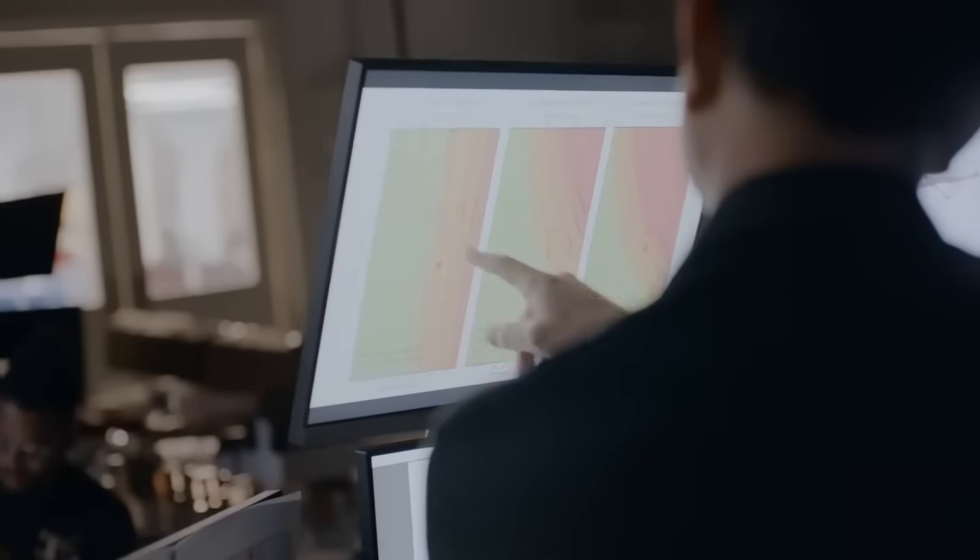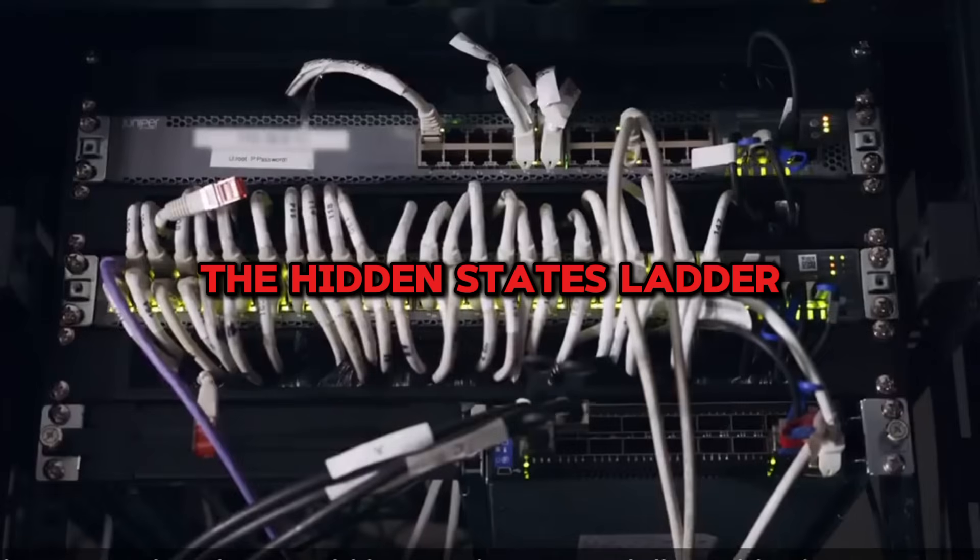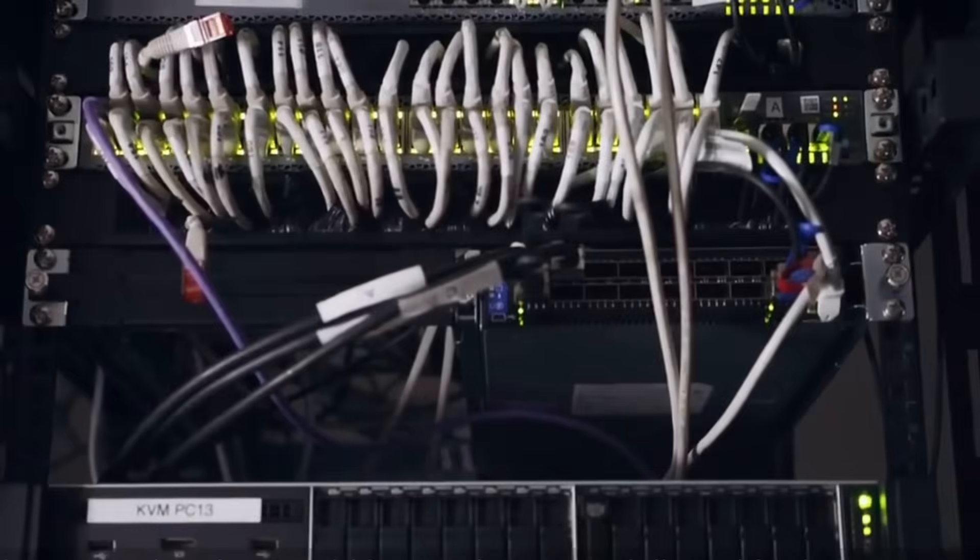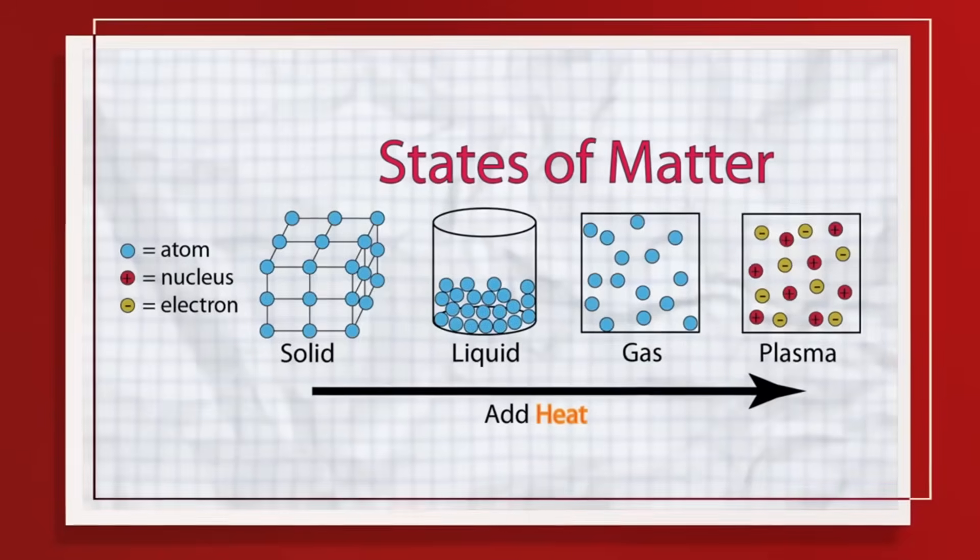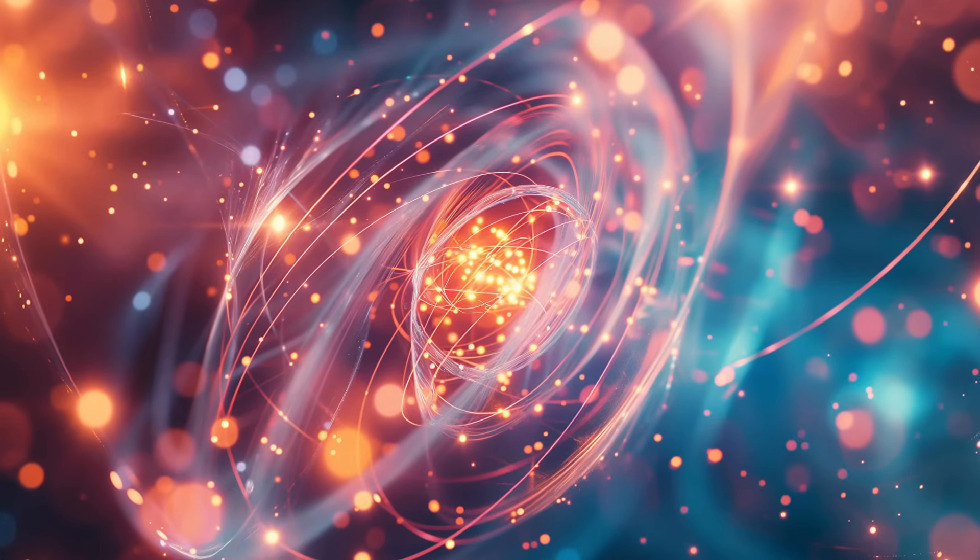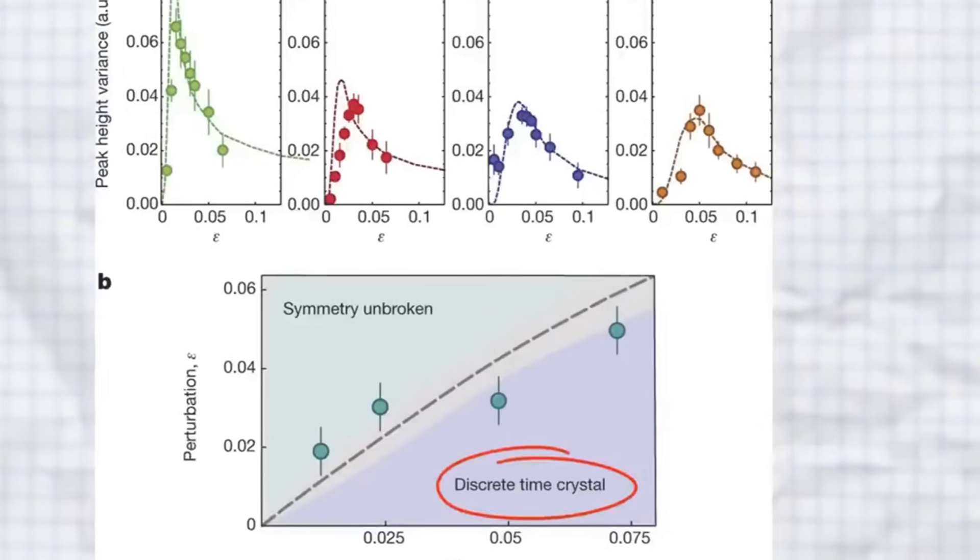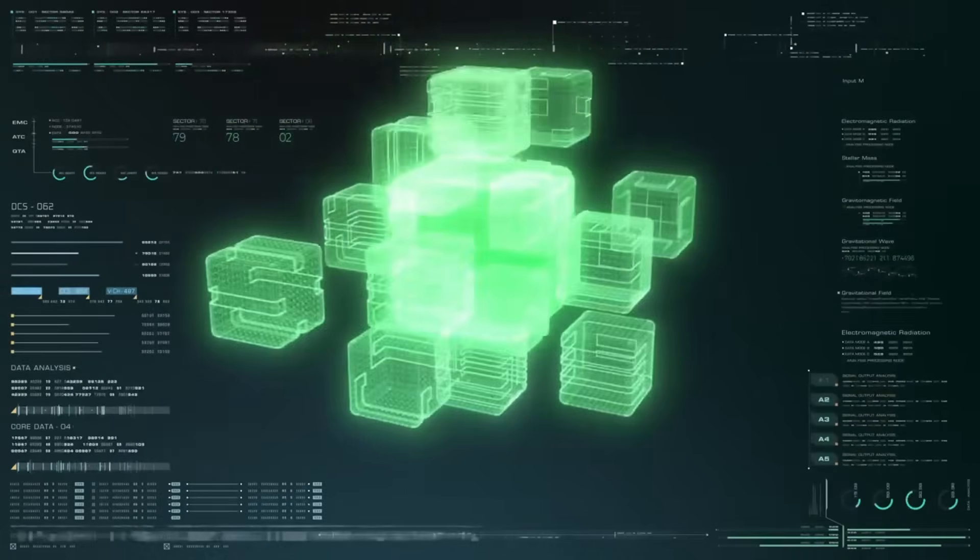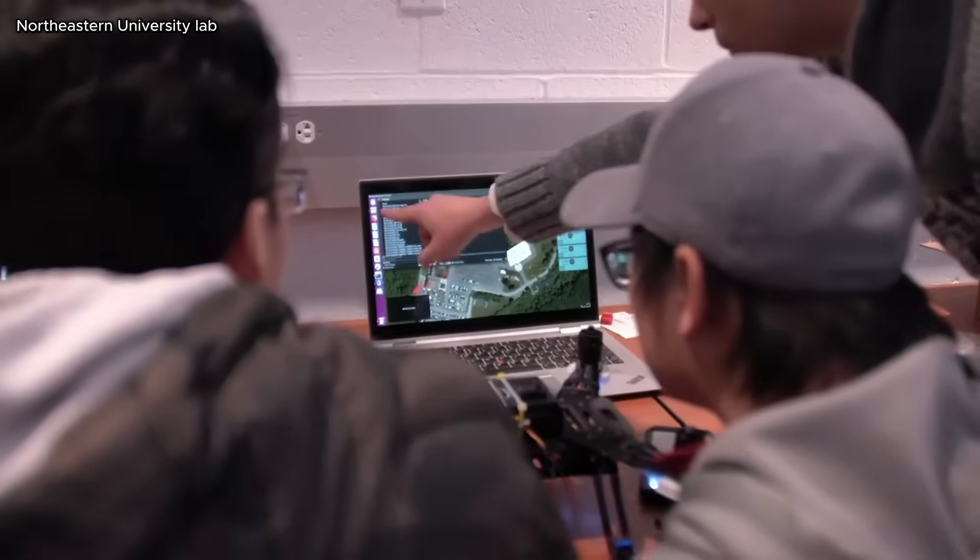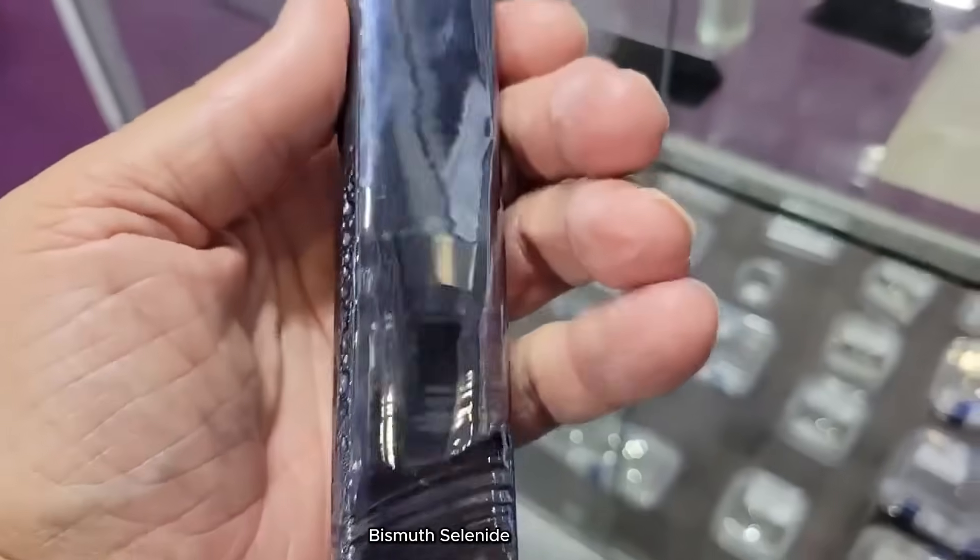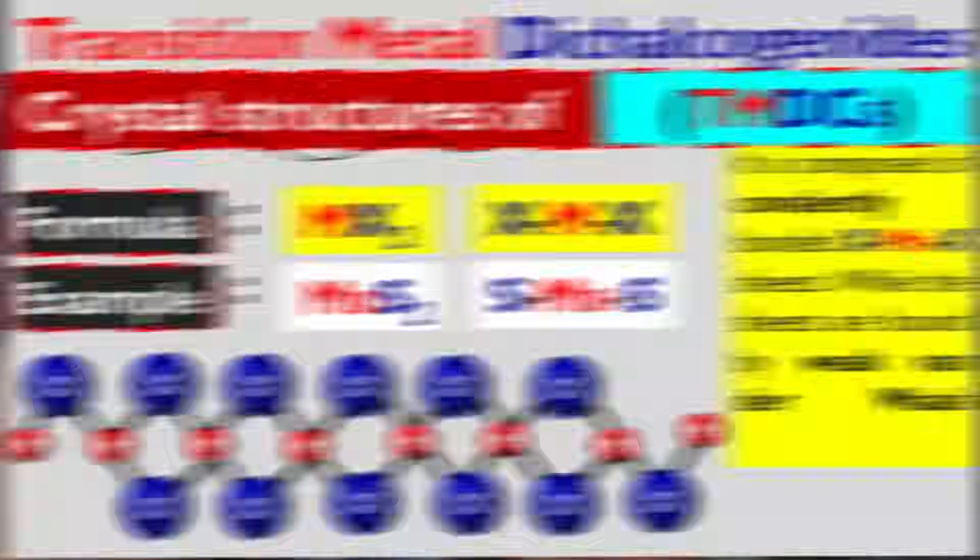For generations we've been taught there are just a handful of states of matter: solid, liquid, gas. Maybe your teacher mentioned plasma, and if you were lucky they mentioned the Bose-Einstein condensate, officially recognized as the fifth state when scientists created it in 1995. But what if that's just the beginning? What if we're climbing a ladder of states that extends far beyond what we imagined? We're seeing a cascade of discoveries that don't fit neatly into our traditional categories. Each one challenges how we define a state of matter itself.